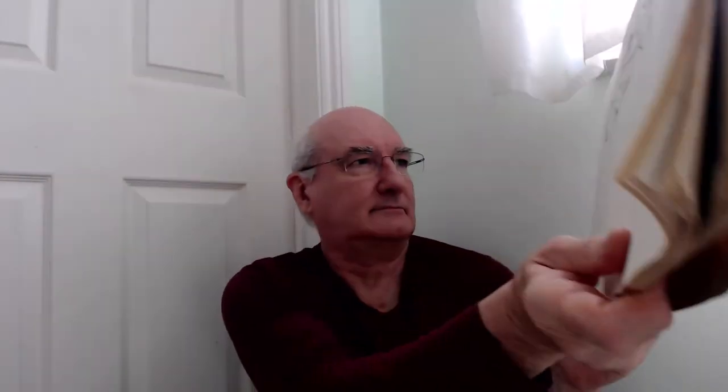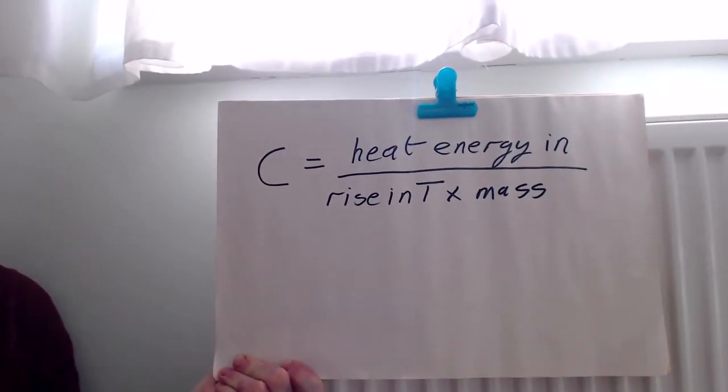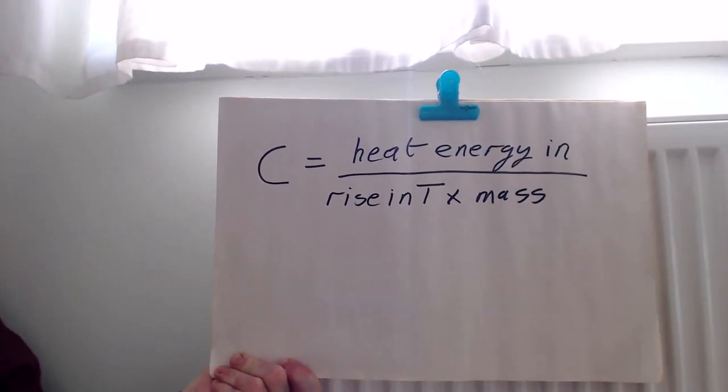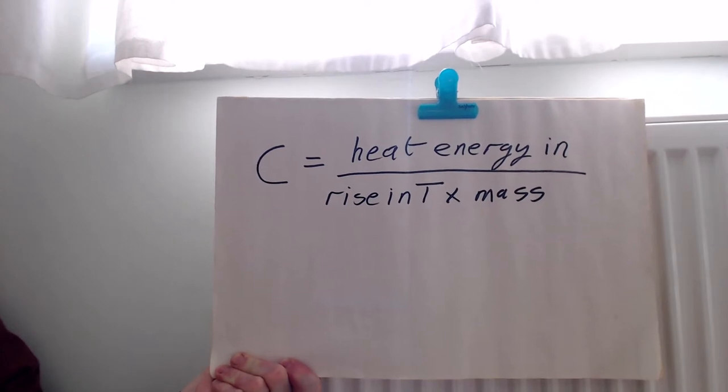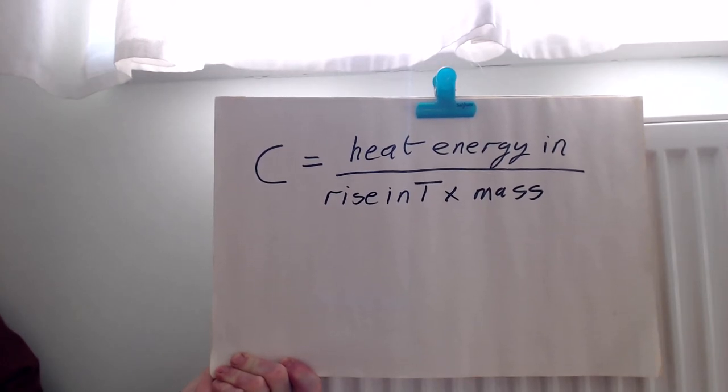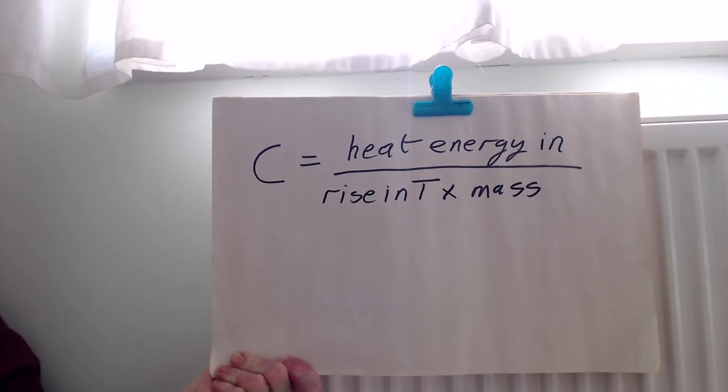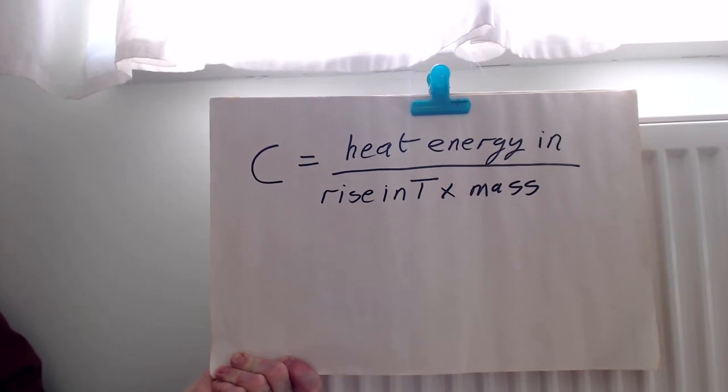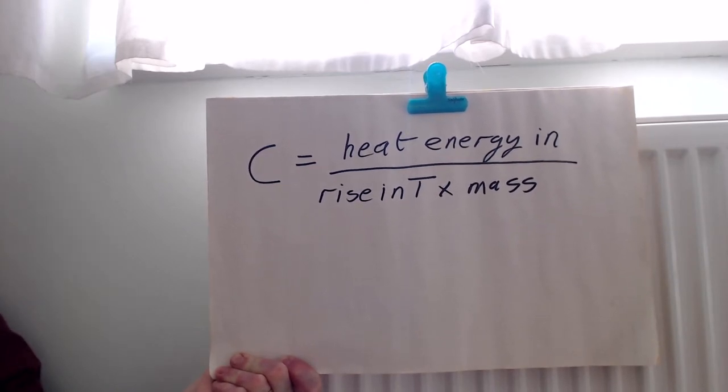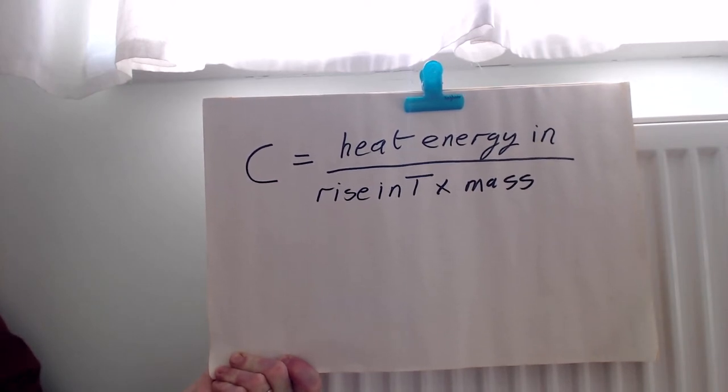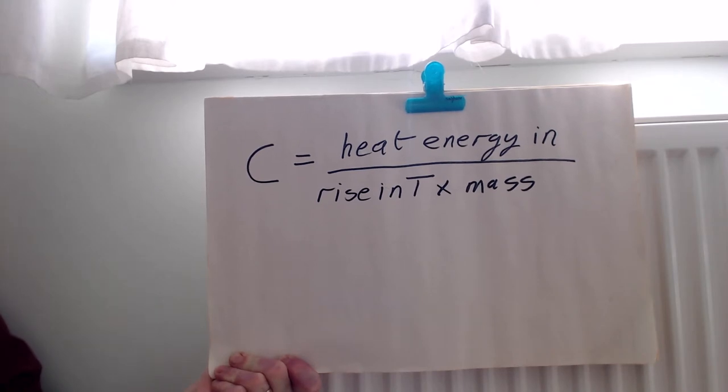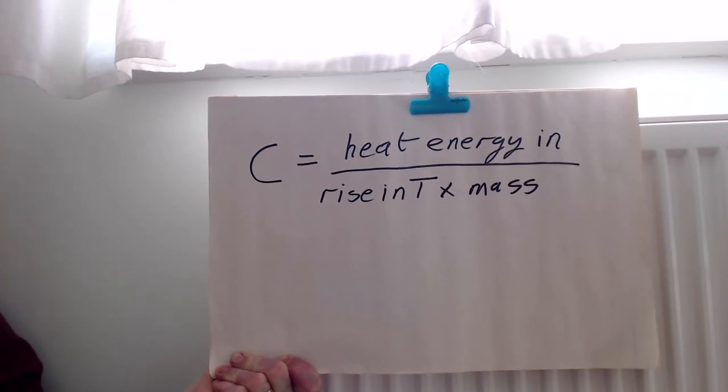So there's our simple equation for heat capacity. The heat energy that goes in is measured in units called joules, and you remember when we looked at water boiling in a kettle we looked at what a joule was, a measure of energy. And then we divide that by the rise in temperature, and we're going to use the centigrade scale, so it's the rise in temperature in degrees centigrade.